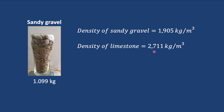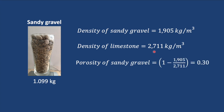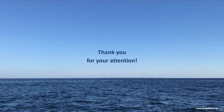We can calculate the porosity of the sandy gravel using the formula: 1 minus the ratio of the solids, which works out at 0.3, or 30%. That means that based on the density of our sandy gravel, we estimate it has a porosity of 30%. In the next video we'll see if this is correct or not. I hope that you enjoyed this video — thank you very much for your attention.